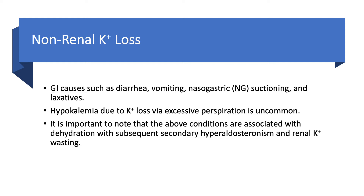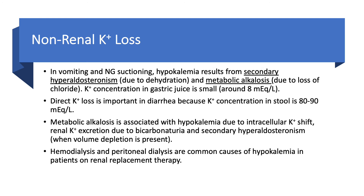In vomiting and NG suctioning, you have loss of potassium, but more importantly you develop secondary hyperaldosteronism. The dehydration leads to secondary hyperaldosteronism, and high aldosterone causes potassium loss. Hypokalemia in vomiting is not due to loss of gastric juices — there's not much potassium in there — it's from hyperaldosteronism secondary to dehydration and metabolic alkalosis. You can have hypokalemia from excessive perspiration, but it has to be a lot. In vomiting and NG suction you also get metabolic alkalosis due to loss of chloride, which we'll discuss in detail when we cover metabolic alkalosis.